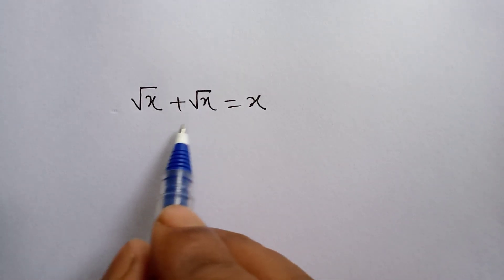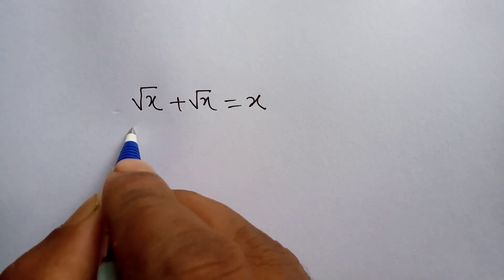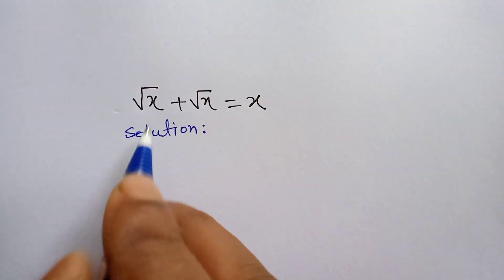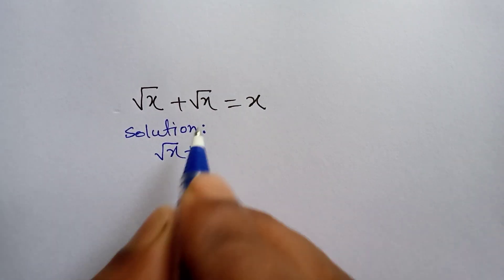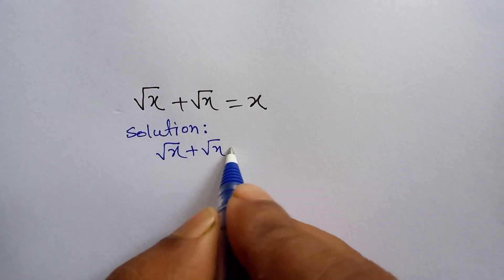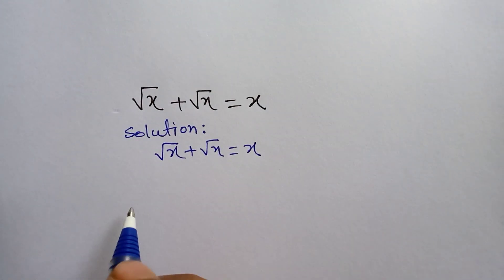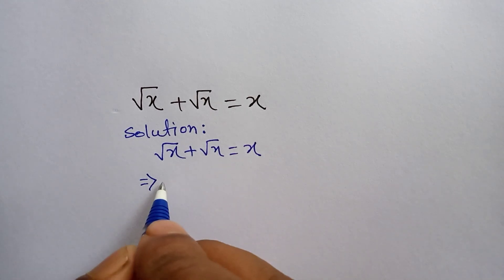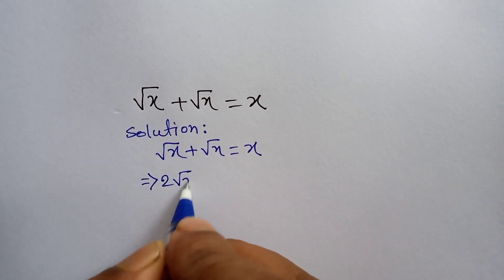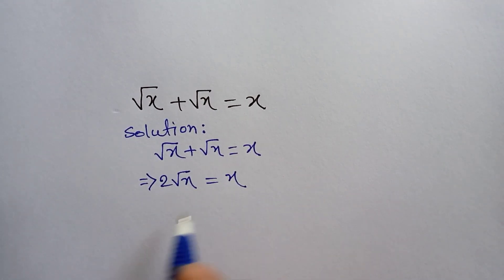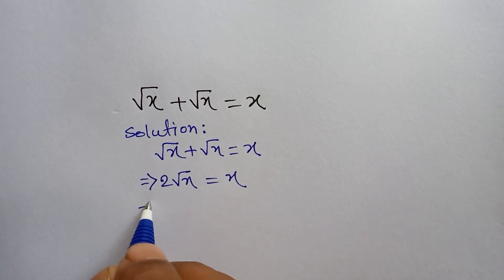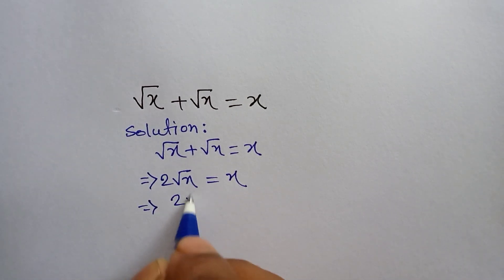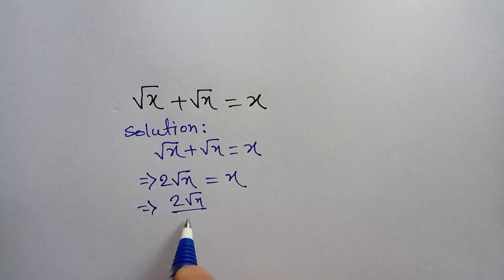Hi everyone, welcome to this math problem solution. We have given: root x plus root x is equal to x. Firstly, we can write root x plus root x is equal to 2 root x, which equals x. Now we divide both sides by 2, so 2 root x divided by 2.